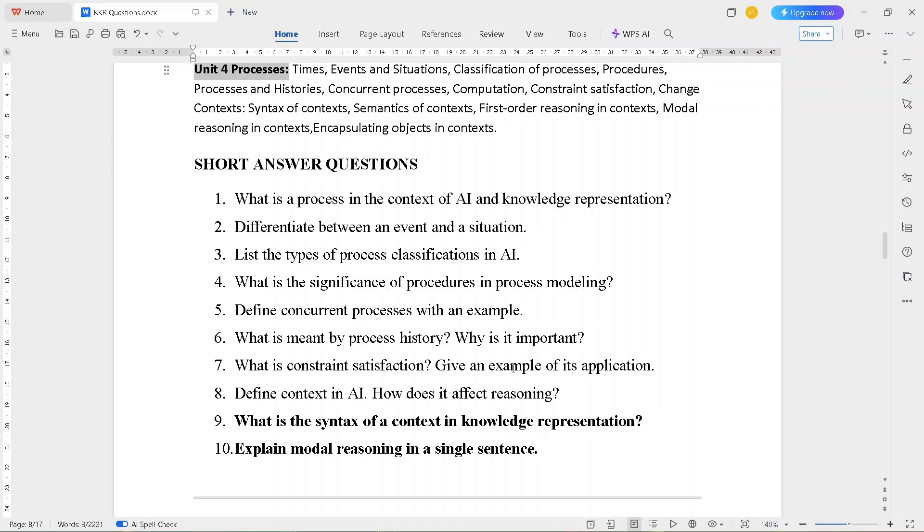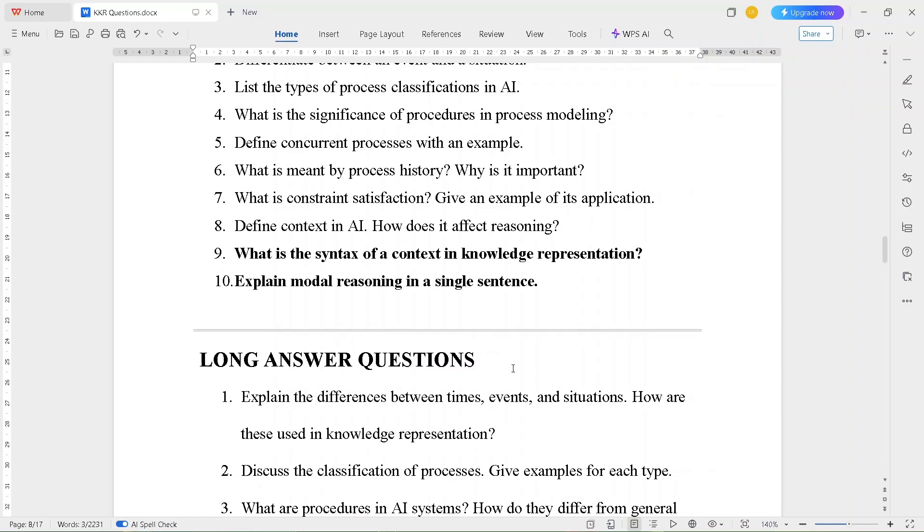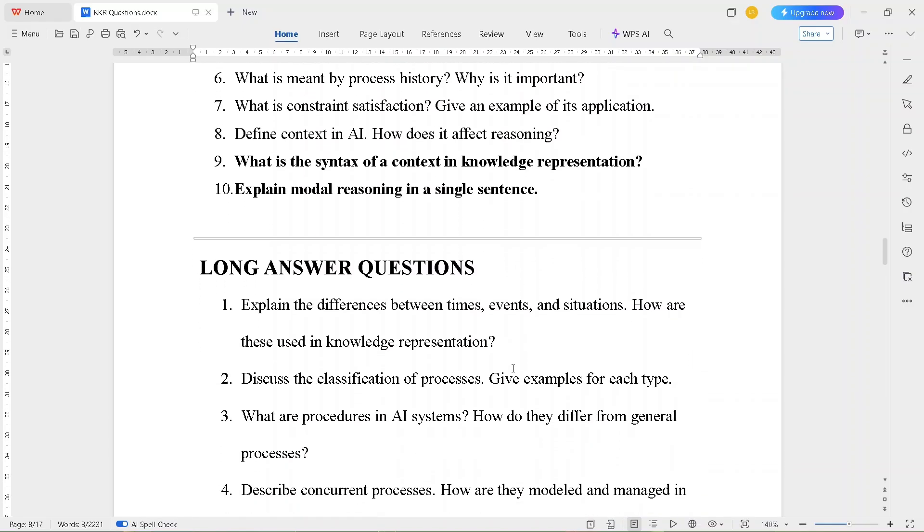What is constraint satisfaction? Give an example of its application. Define context in AI. How does it affect reasoning? What is the syntax of a context in knowledge representation? And tenth question is, explain model reasoning in a single sentence. These are the short answer questions. In this unit, I will give only ten questions.